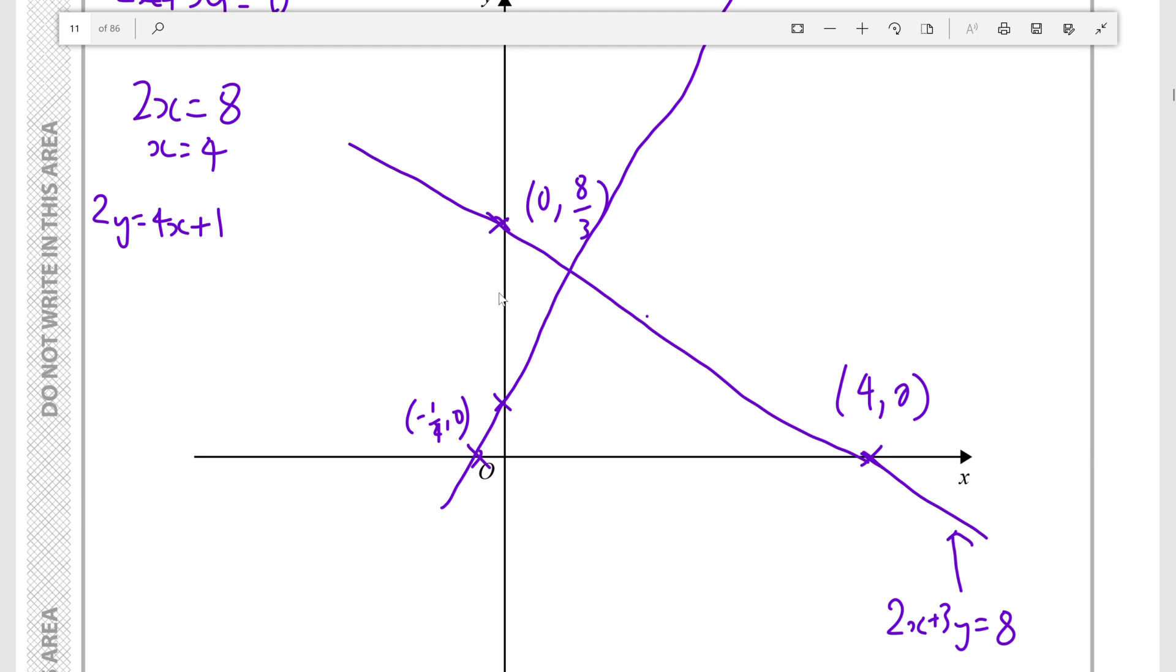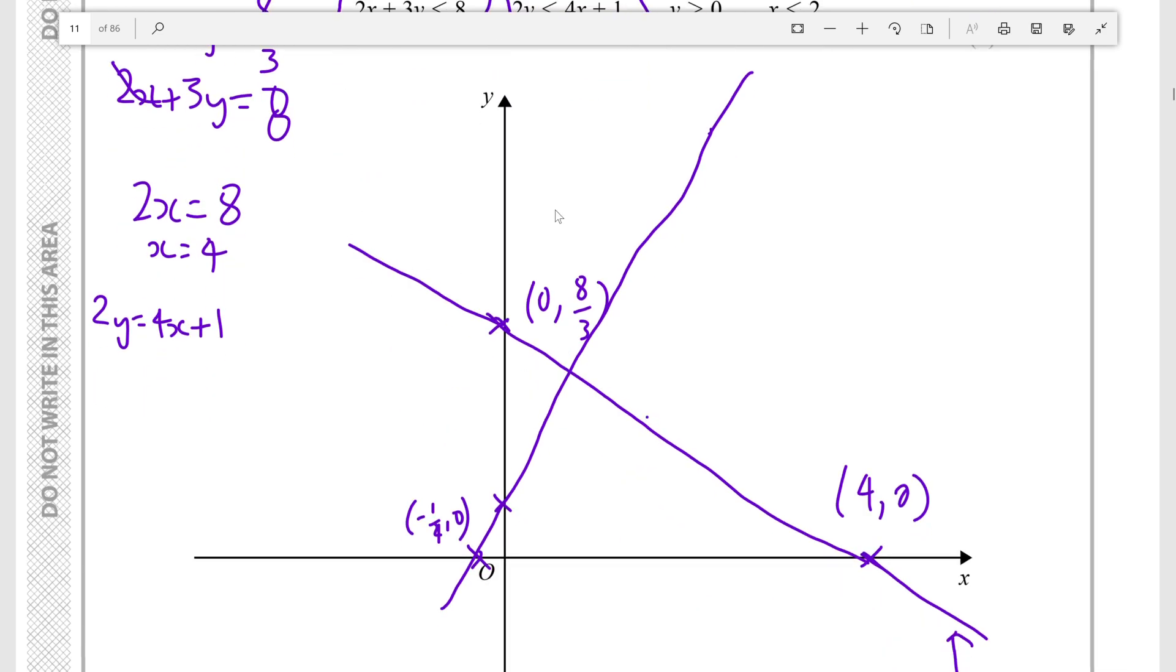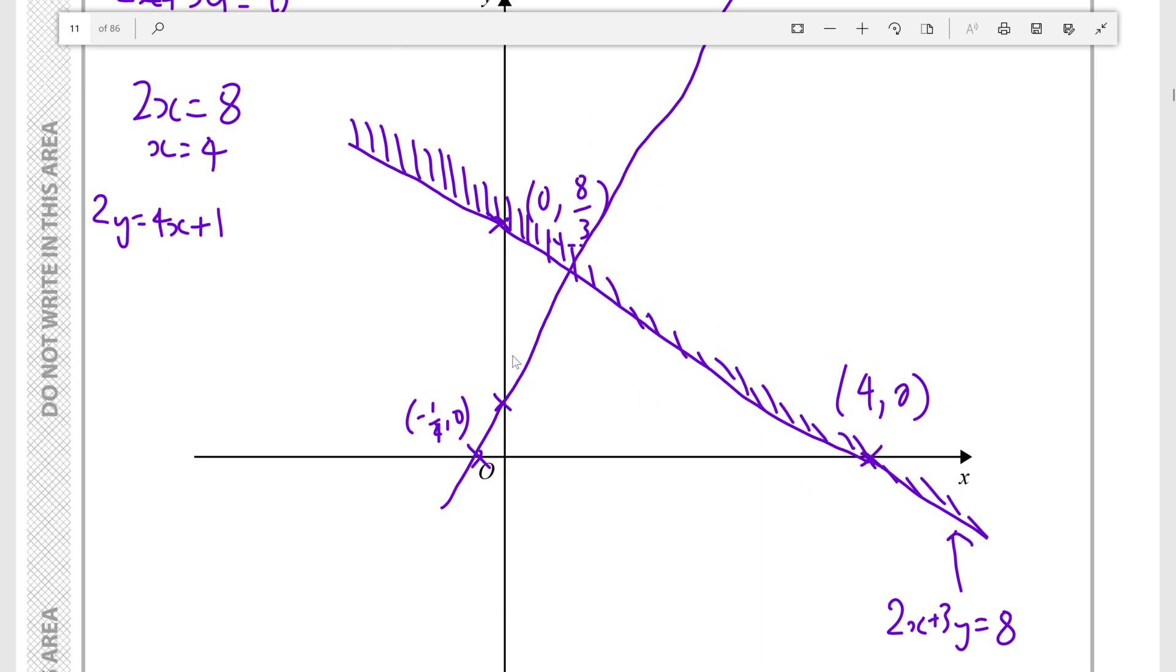So we must determine which side of the line that is. So for example if x is 0, 3y must be less than or equal to 8, that means it'll be down. And since it's down we know it is not on this side. Let's just shade this here to show that we know it is not on this side. And then 2y is less than or equal to 4x plus 1. Let's say x is 0, 2y is less than or equal to 1, so it must be underneath this curve as well because it's looking for something that's down from here.